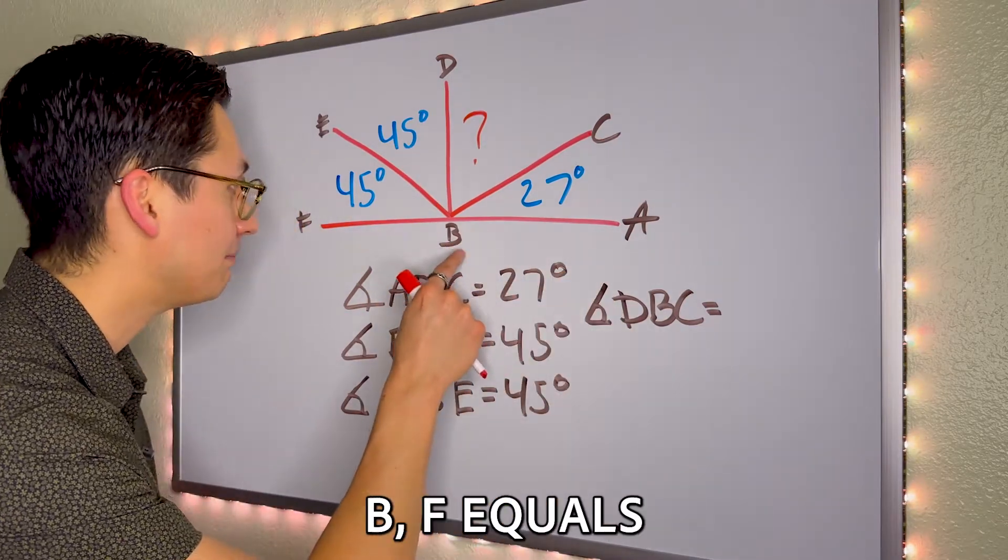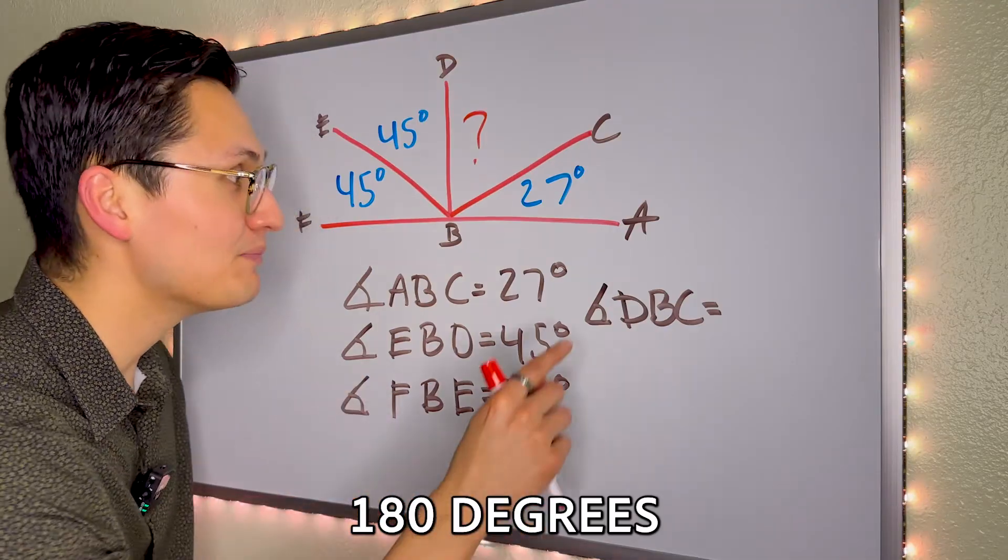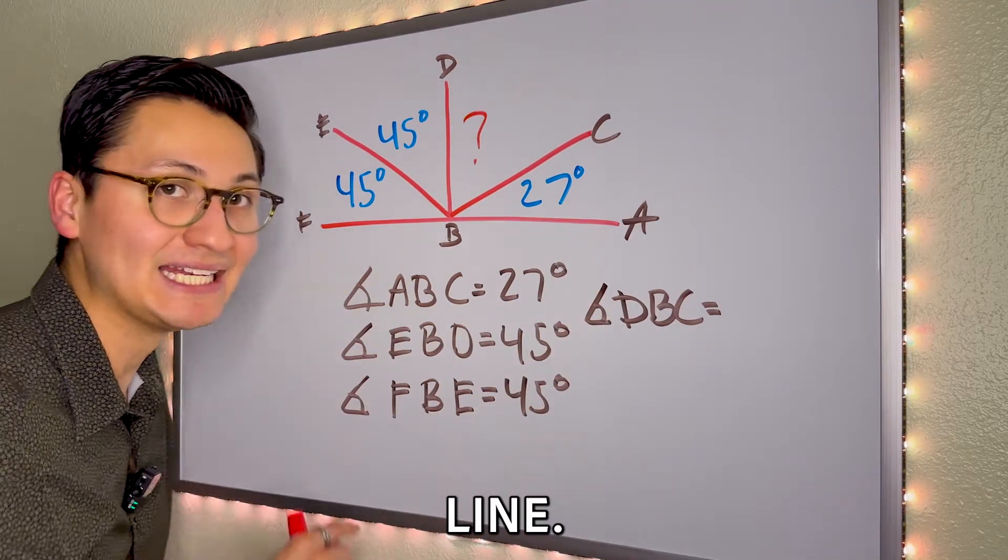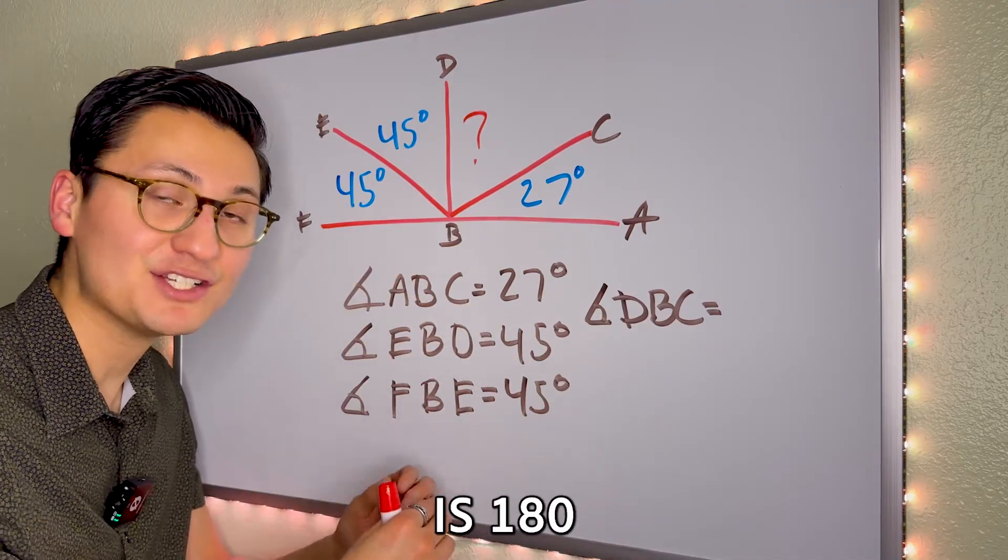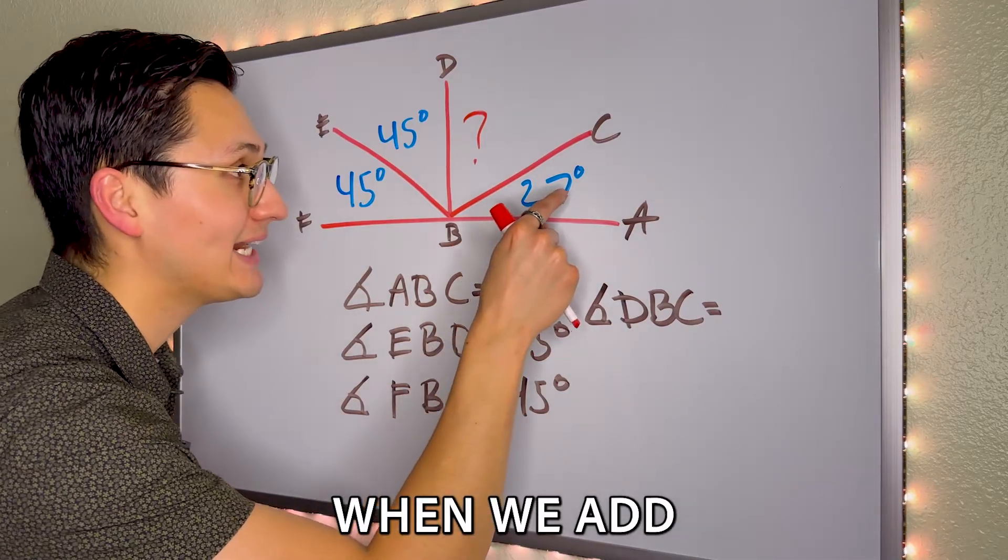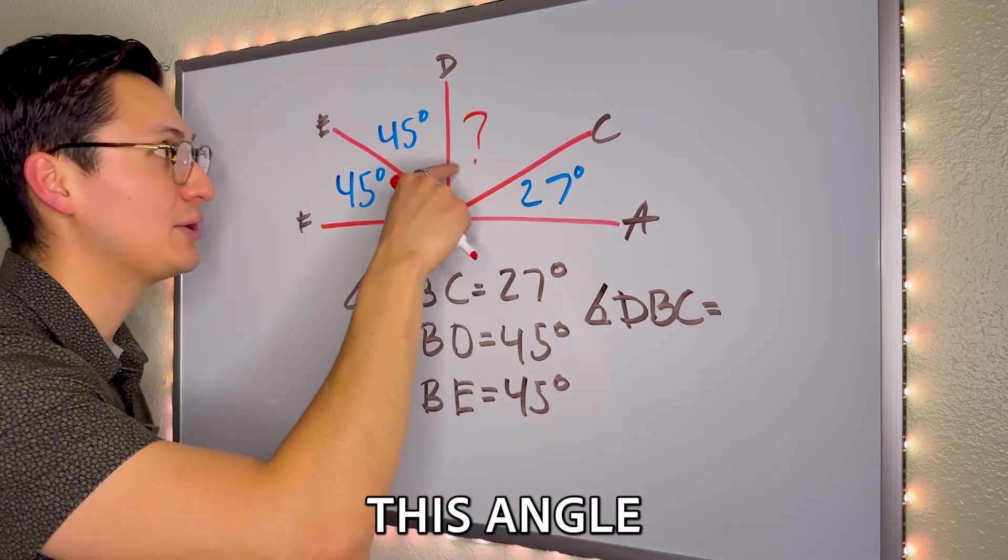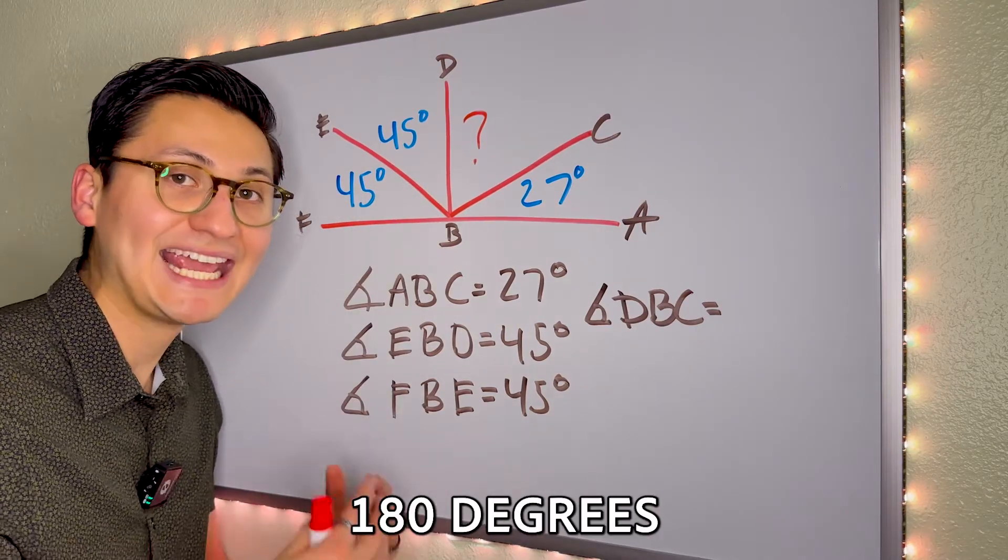We know that angle A, B, F equals 180 degrees because it's a straight line. And if you go back to the ROSE, S stands for straight and S is 180 degrees. So we know that when we add this angle, plus this angle, plus this angle, plus this angle, it should give us 180 degrees.